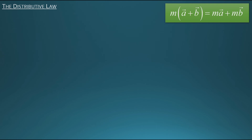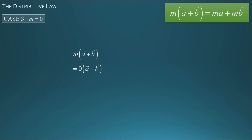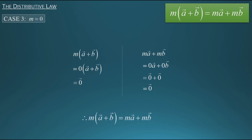Finally, let's look at the case where m equals zero. We don't need a diagram for this case — we can simply use the equation and show that the left and right sides work out to the same value. On the left side, m times vector A plus vector B becomes zero times vector A plus vector B. Since vector A plus vector B gives us a vector, and multiplying any vector by zero gives the zero vector, the left side equals the zero vector. On the right side, m times vector A plus m times vector B becomes zero times vector A plus zero times vector B, which is the zero vector plus the zero vector — also the zero vector. Therefore, m times vector A plus vector B equals m times vector A plus m times vector B, since both sides work out to the zero vector.